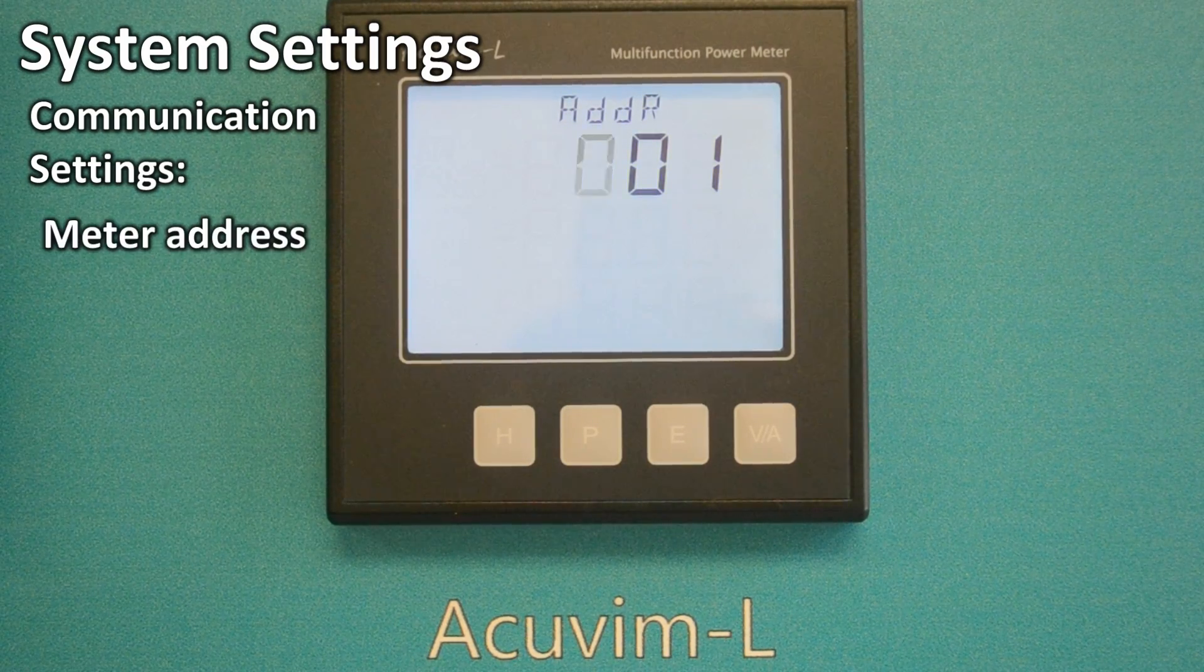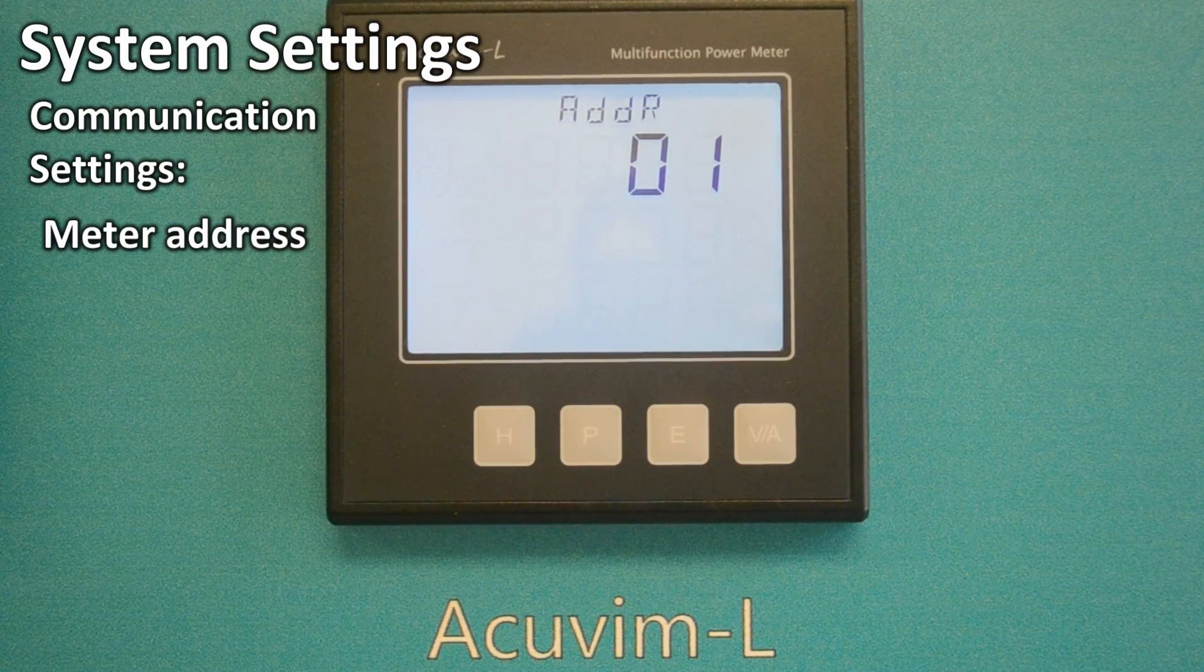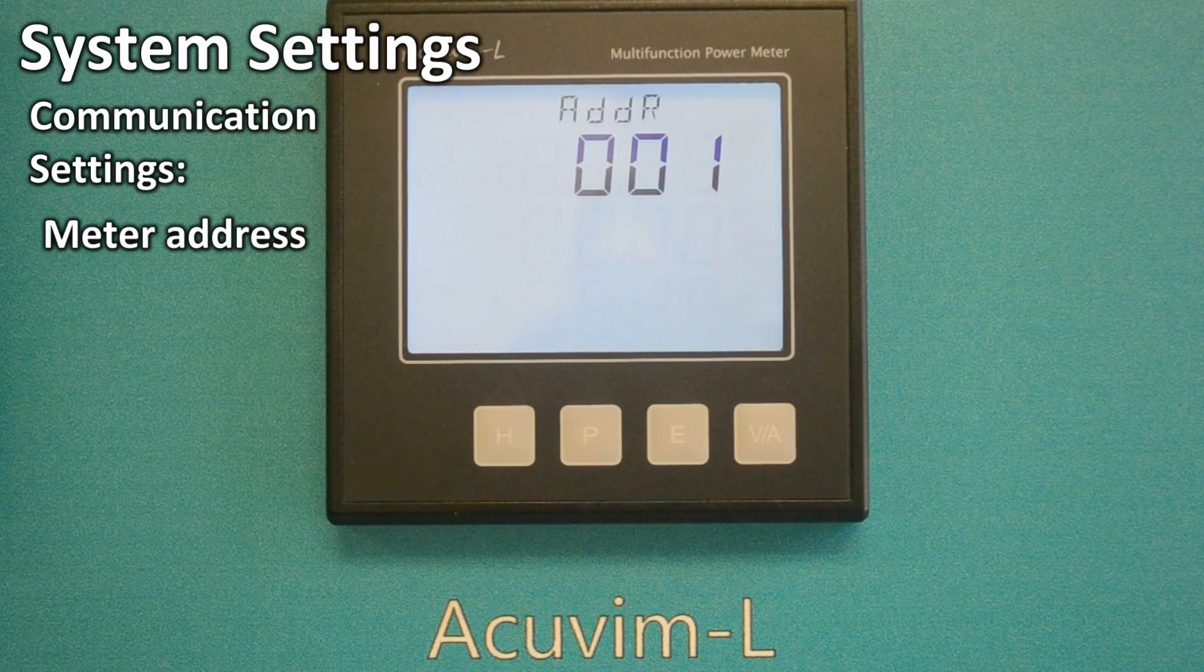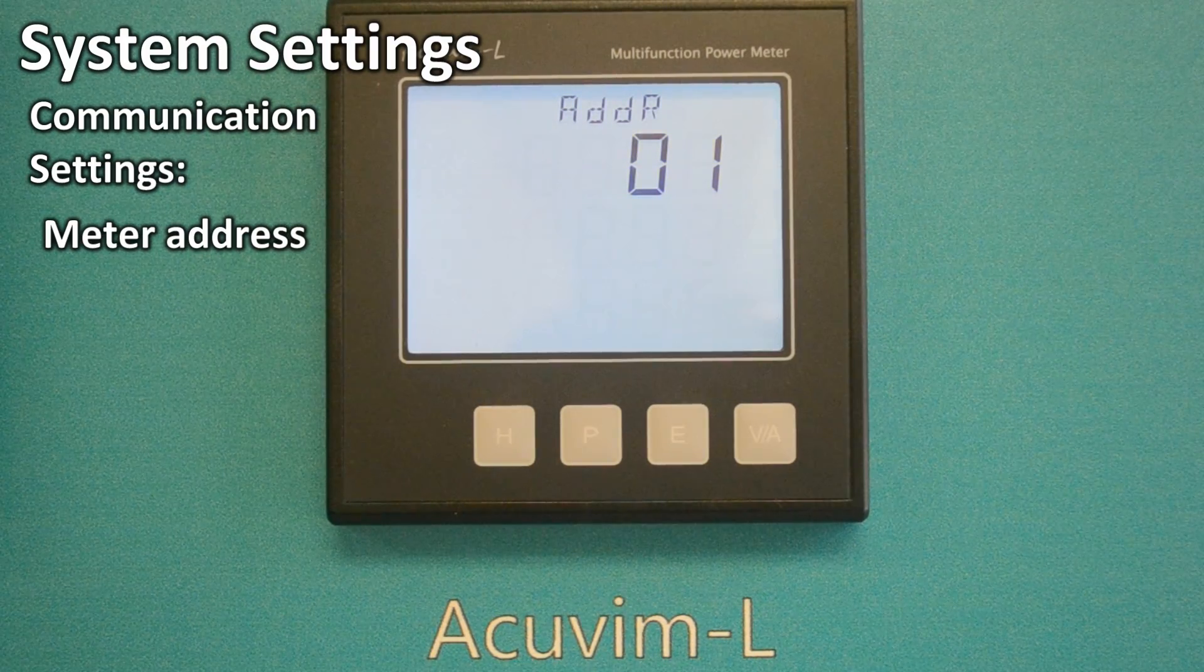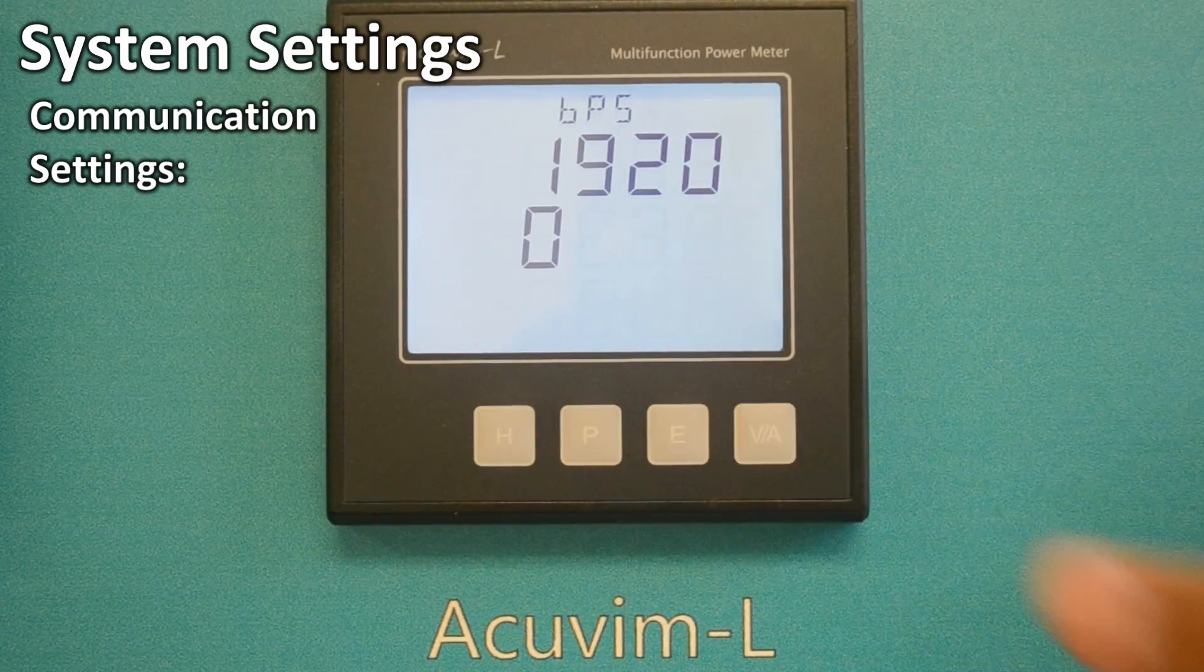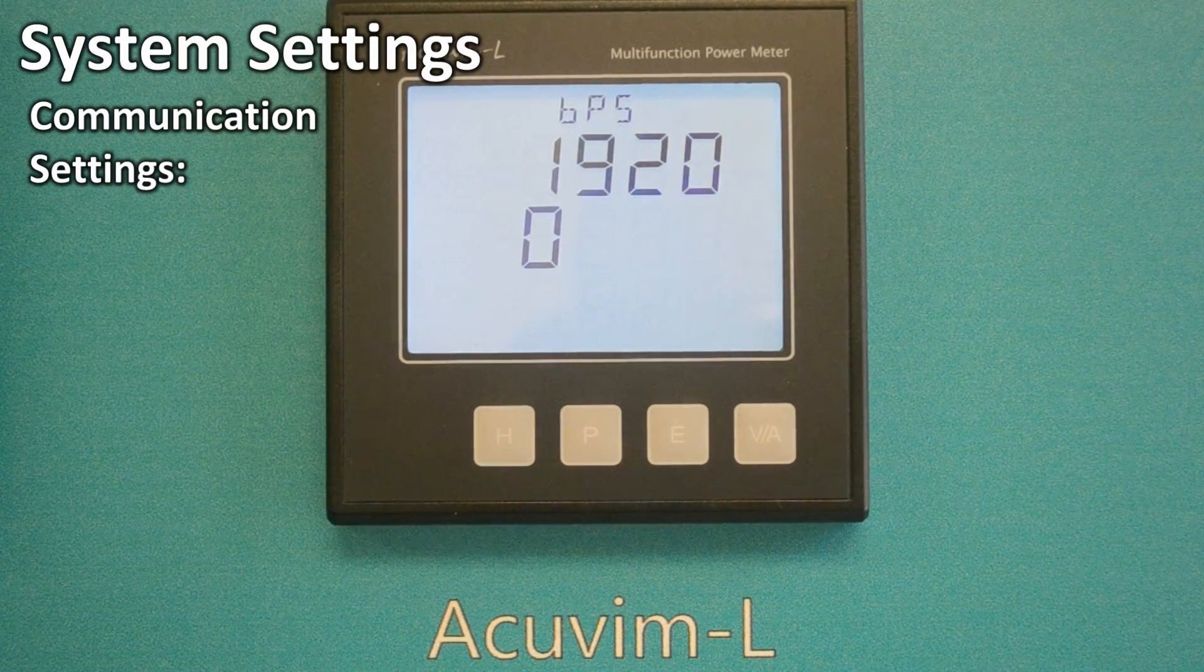The first screen is ADDR001, meaning the address is 1. Pressing the VA key repeatedly will move you to the next screens.